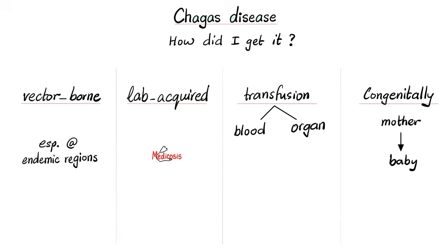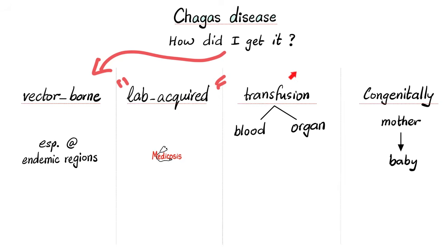How do I contract Chagas disease? There are many ways. There is the vector-borne method, especially in endemic regions such as Central and South America. You can also get it through lab preparations — if you were handling trypanosomes and were not careful. Then there is transfusion-acquired: blood transfusion or organ transplant contaminated with Trypanosoma cruzi. And there is congenital infection — vertical transmission from the mother to the baby.